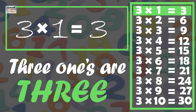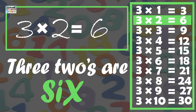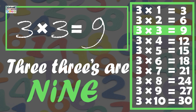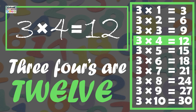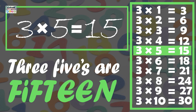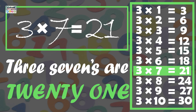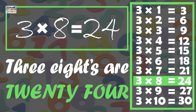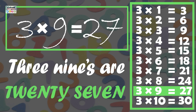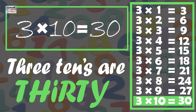3 ones are 3, 3 twos are 6, 3 threes are 9, 3 fours are 12, 3 fives are 15, 3 sixes are 18, 3 sevens are 21, 3 eights are 24, 3 nines are 27, 3 tens are 30.